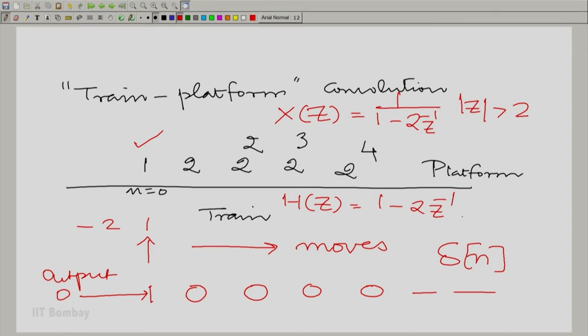Here, H of z is 1 minus 2 z inverse. And the only thing you have to exclude is to exclude the 0 point, |z| greater than 0. Otherwise, everything else is all right.